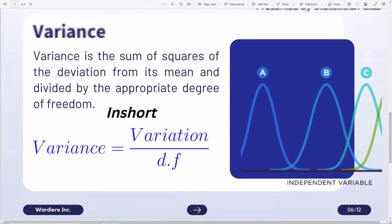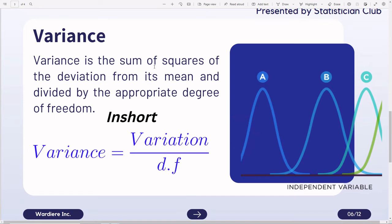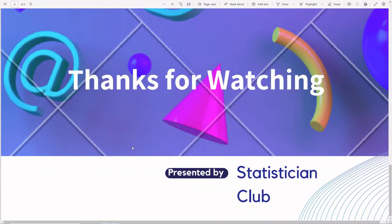What is variance? Variance is the sum of squares of deviation from its mean divided by the appropriate degree of freedom. In other words, variance equals variation over degree of freedom. When we divide the variation by its degree of freedom, it is called variance. If you want to see videos on the difference between standard error and standard deviation,